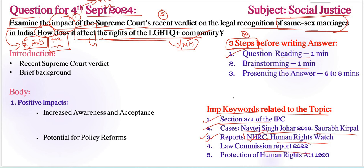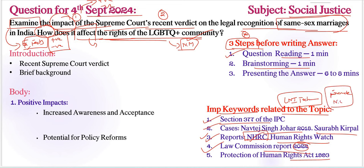The Law Commission Report 2022 also has very important recommendations. The Protection of Human Rights Act 1993 also needs to be added. Following the LNI technique, an international perspective can be added — for example, France and some Norwegian countries have recognized same-sex marriages.